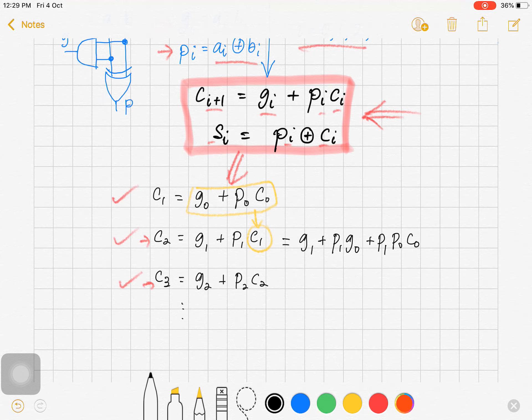And similarly, we substitute C2 into here, and then we get C3 equals G2 or P2 G1 or P2 P1 G0 or P2 P1 P0 C0.